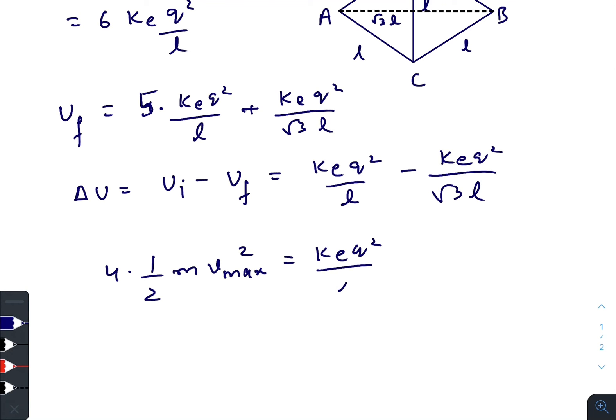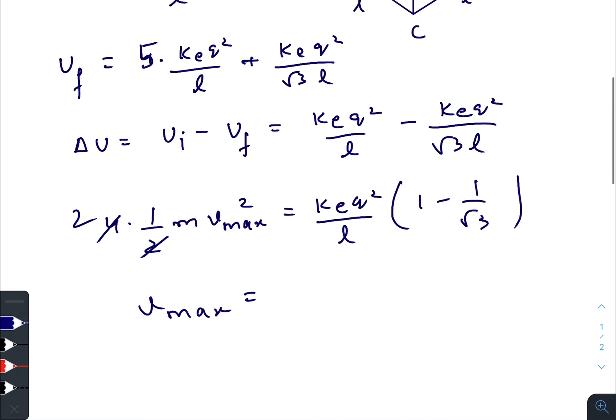ke means 1 by 4 pi epsilon naught, so 1 by 2 pi epsilon naught q squared by ml, 1 minus 1 by root 3. So this will be your final answer and v max for each particle will be same.